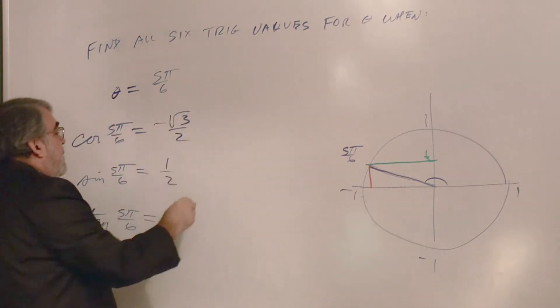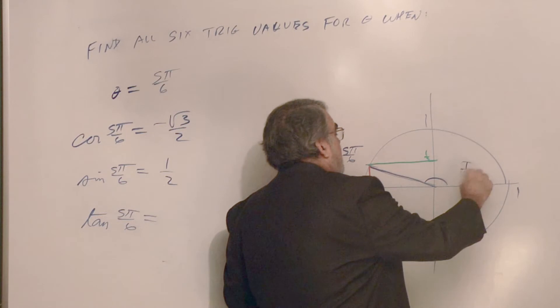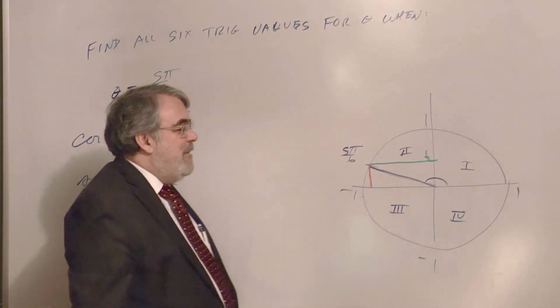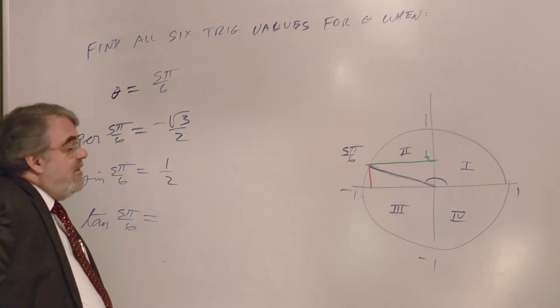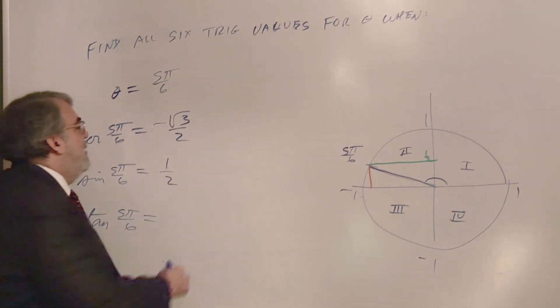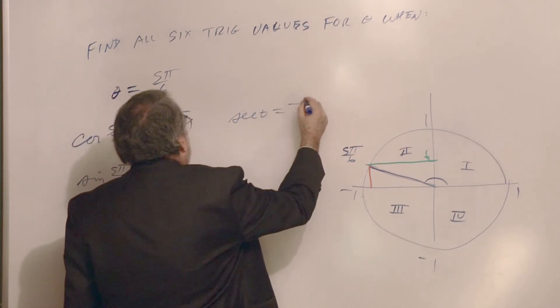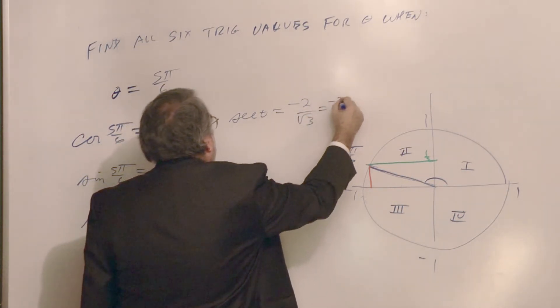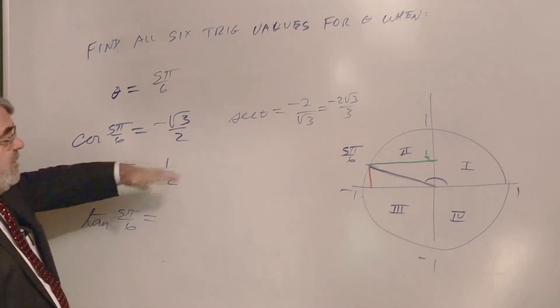And it's positive. So in the second quadrant, where the quadrants go first quadrant, second, third, and fourth quadrants. They're usually done in Roman numerals. So in the second quadrant, the x's are negative, the y's are positive. So cosine and secant are going to be negative.